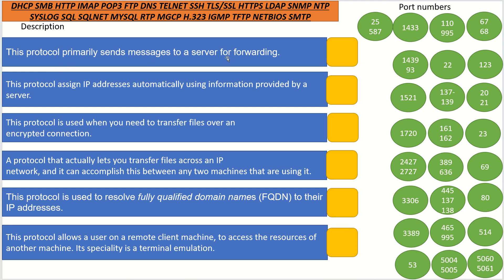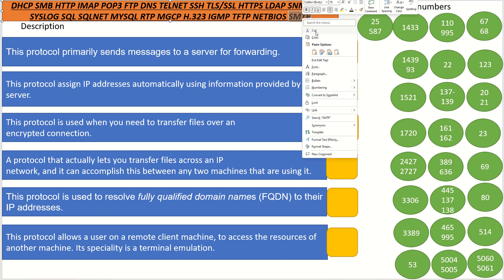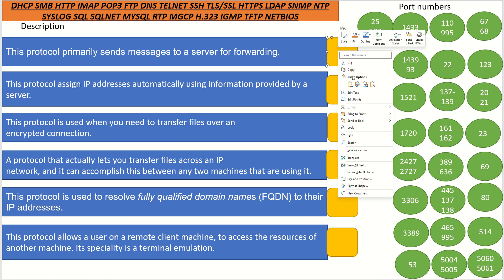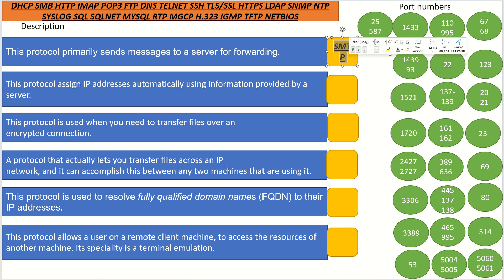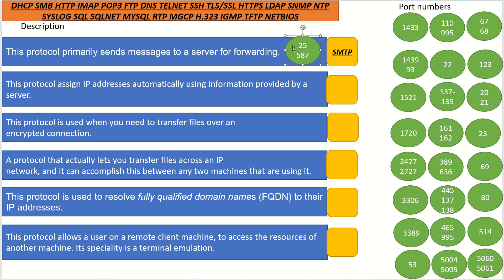This protocol primarily sends messages to a server for forwarding. What protocol does that? That's right — that's Simple Mail Transfer Protocol. Let's cut the text and paste it over here. Simple Mail Transfer Protocol is the first one. For the port number on the right side, it uses port 25, and a secure connection uses port 587. Those are important port numbers you need to know.